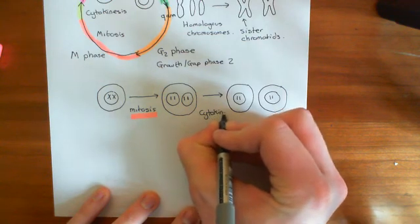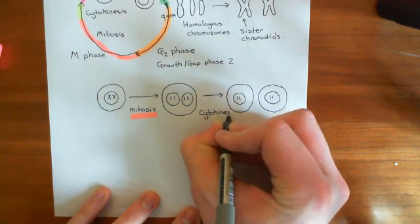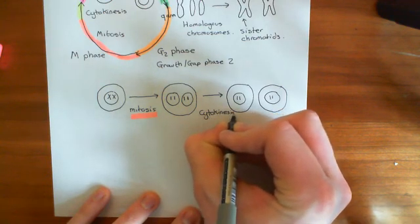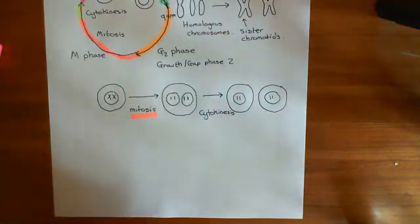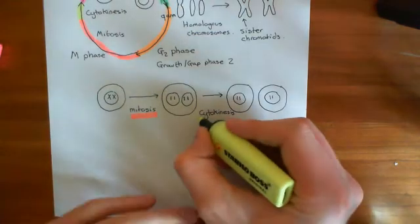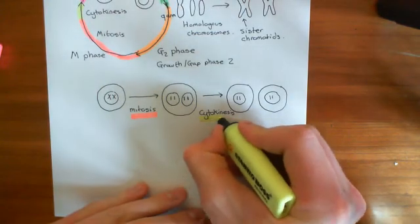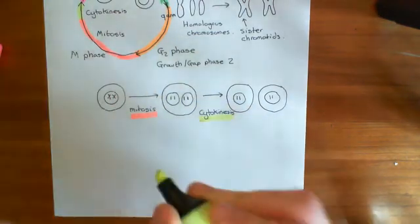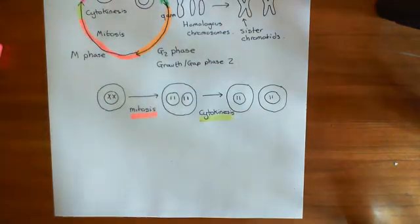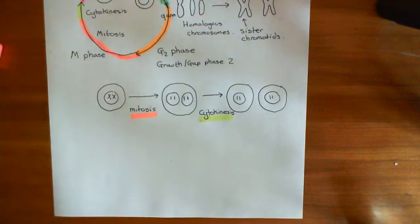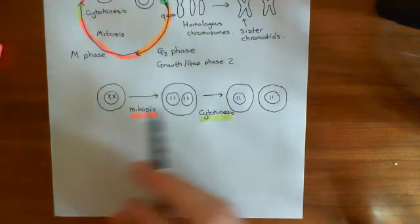The next process after mitosis is actually splitting the entire cell in two — that process is known as cytokinesis. Cytokinesis refers to the cell actually splitting into two, going from a state of having two nuclei to splitting into two separate daughter cells with one nucleus in each.